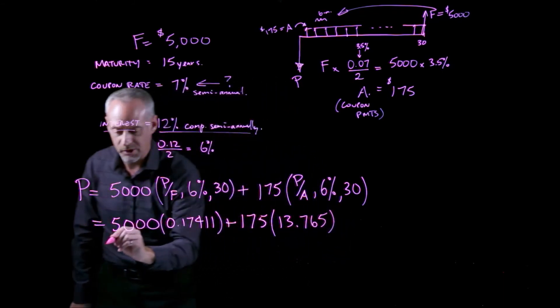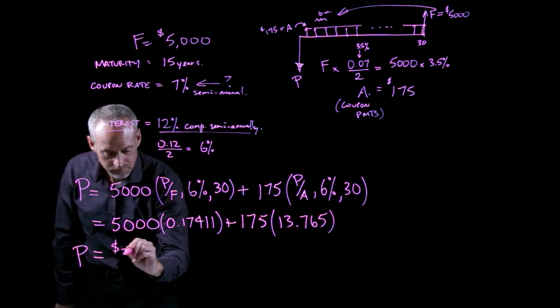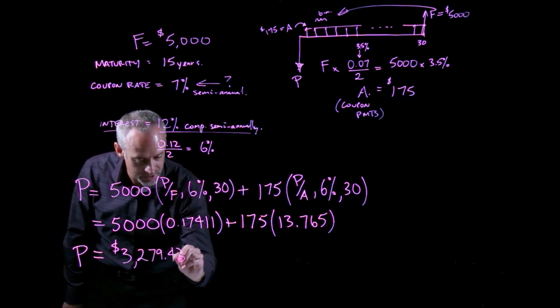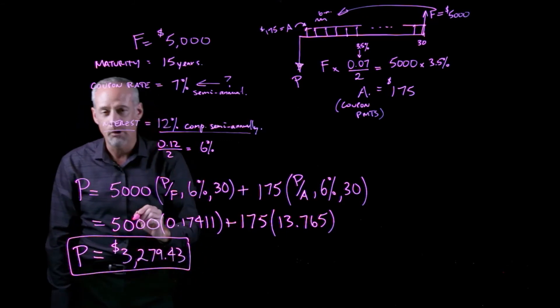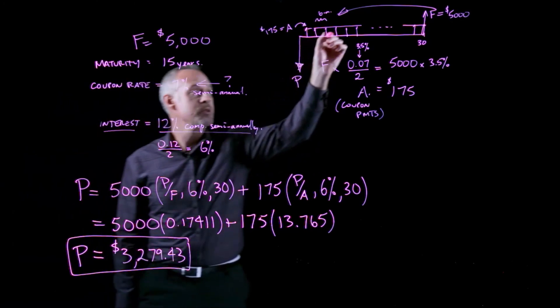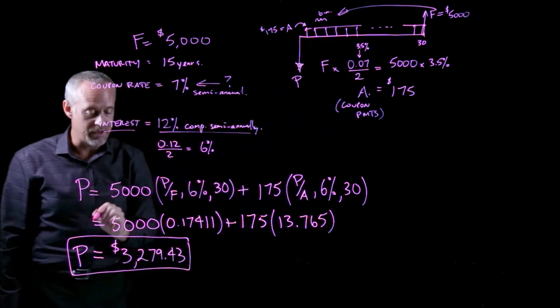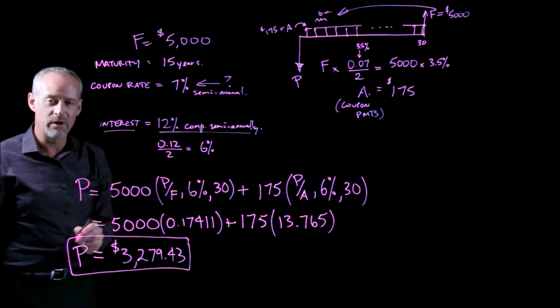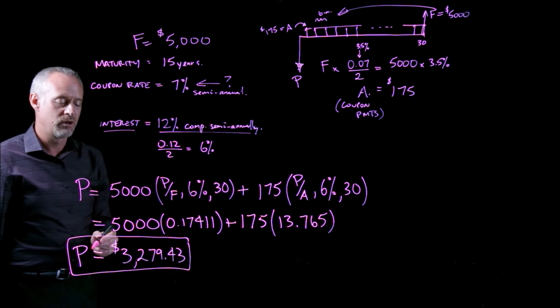If I go ahead and multiply that out, I end up with a purchase price of $3,279.43. So the price that I'm willing to pay for this cash flow diagram, called a bond, is $3,279.43. And you might say, but this is a $5,000 bond. Why am I only willing to pay $3,280 for the bond?